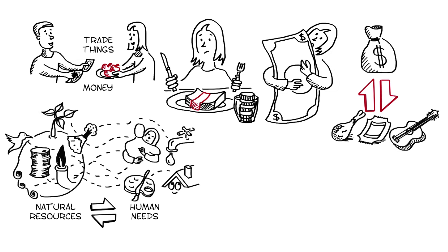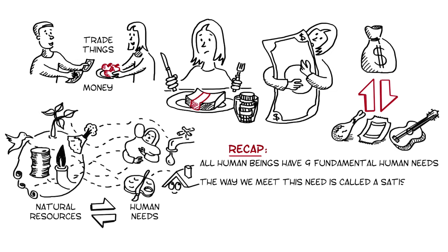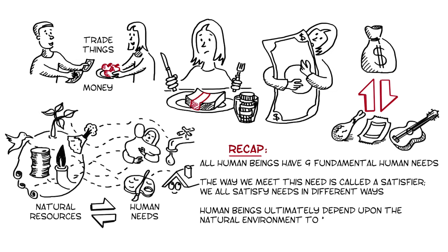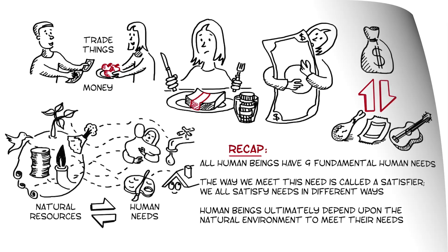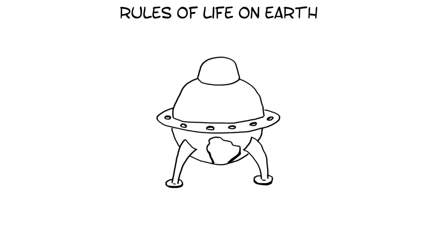Before moving on, let's take a recap of what we've learned so far. All human beings have nine fundamental human needs. The way we meet these needs is called a satisfier. We all satisfy needs in different ways. And human beings ultimately depend upon the natural environment to meet their needs. If we have to be able to meet our needs without wrecking planet Earth, we need to understand its operating system, the rules by which the game of life is played.